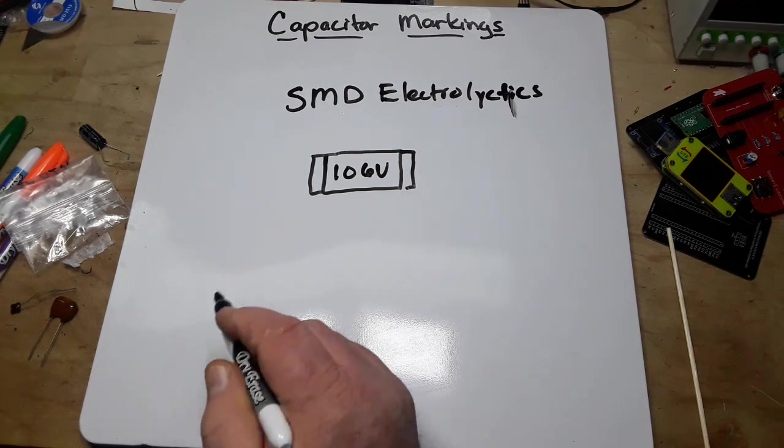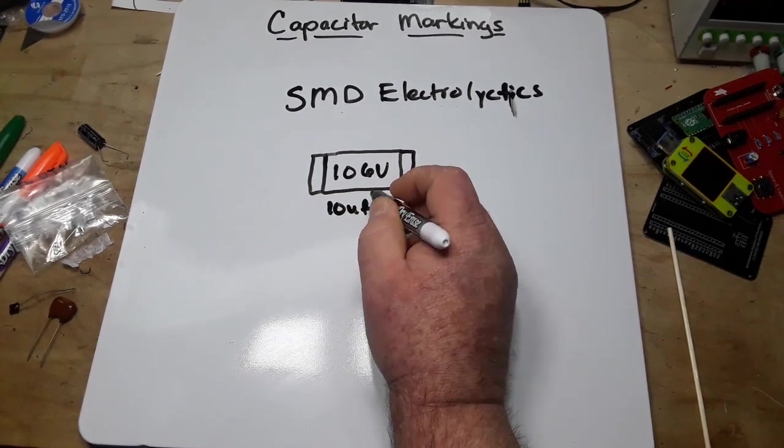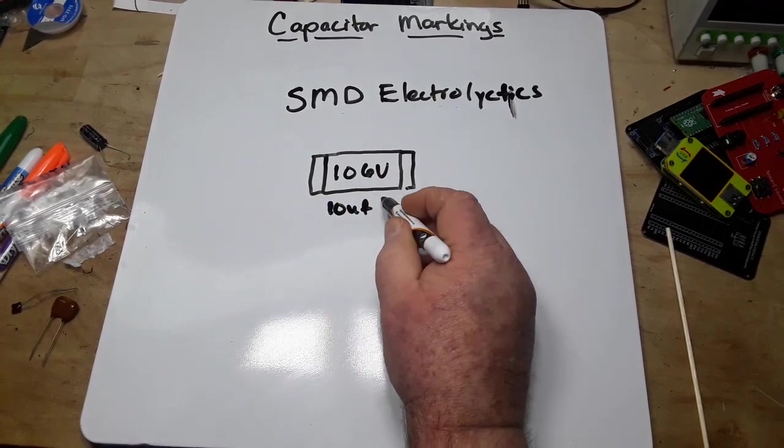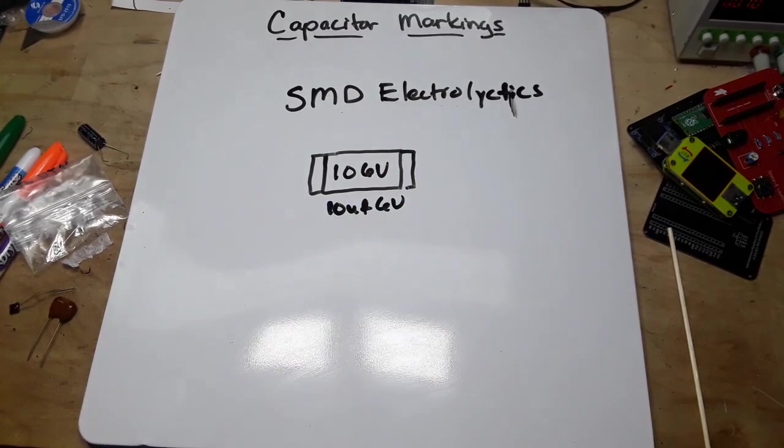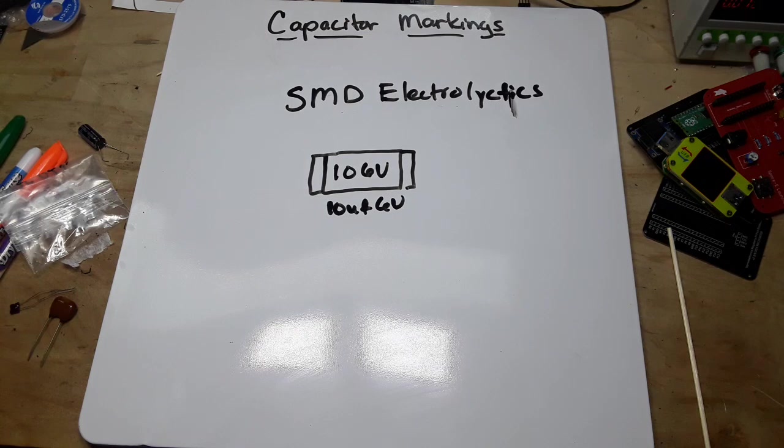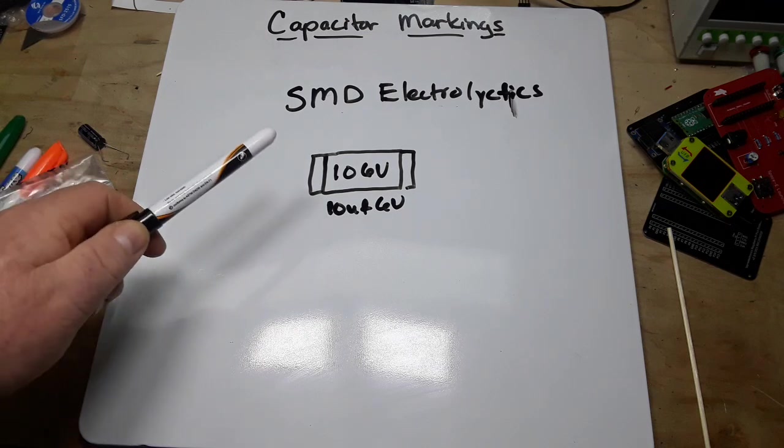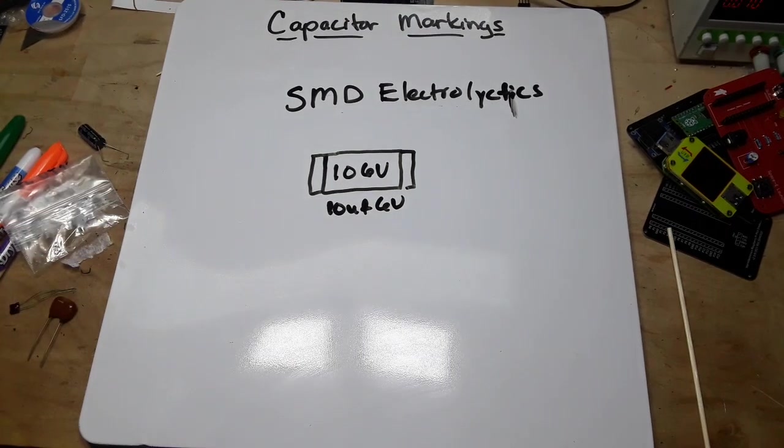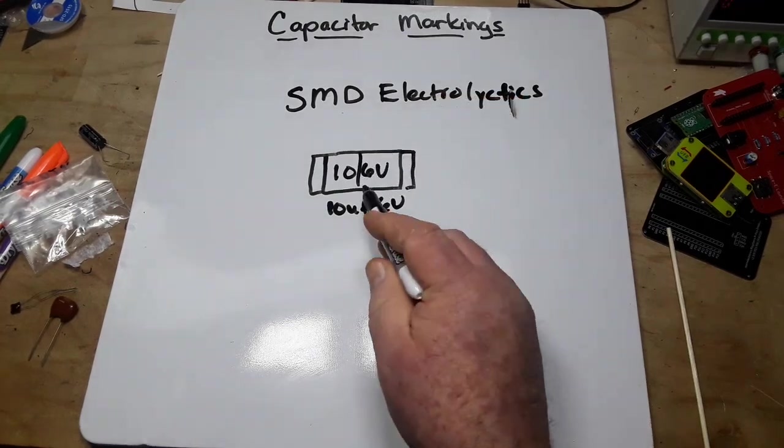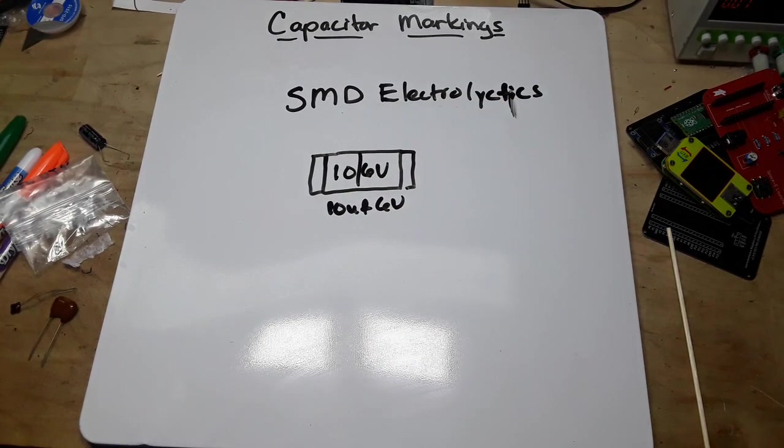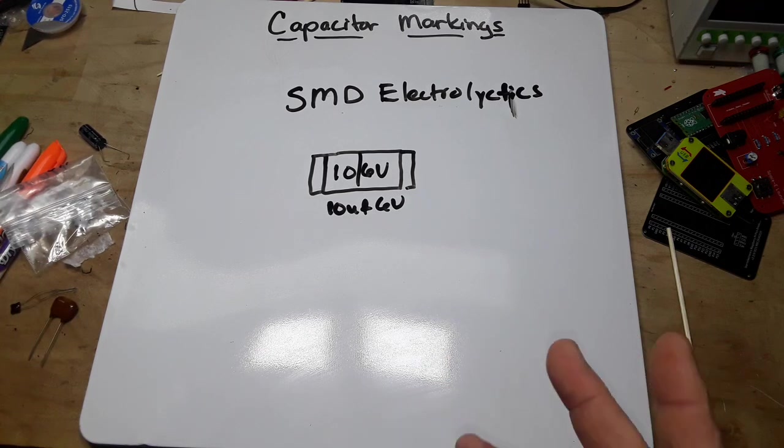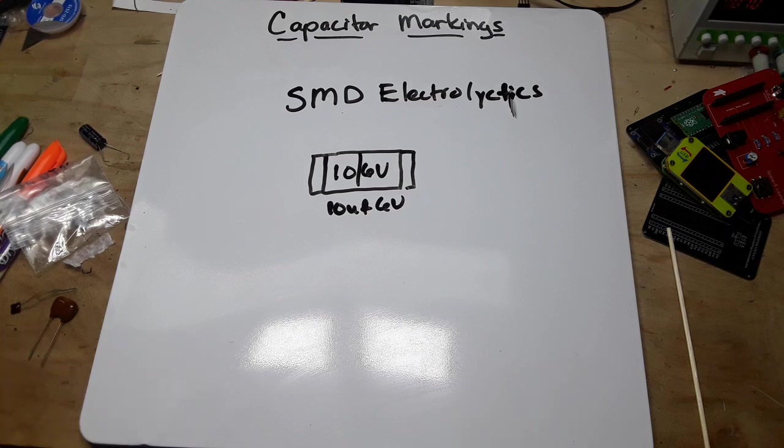What does that mean? Well in this case it means 10 microfarad at 6 volts. So just be aware that there are SMD electrolytics, and you just kind of read them like this. They'll tell you in microfarads and the voltage. They're generally going to be in microfarads, not picofarads, because they're using the electrolytics for their larger values.